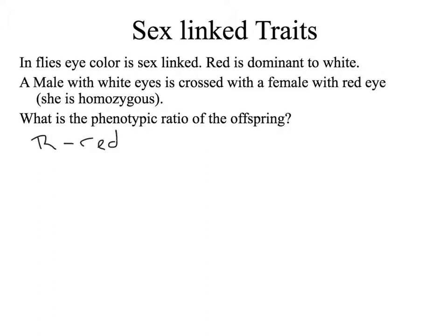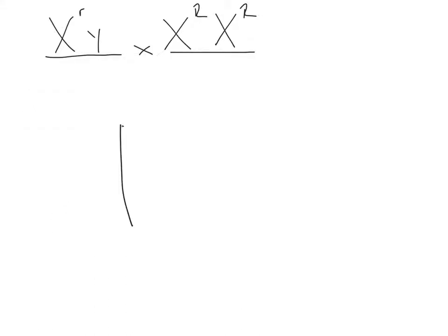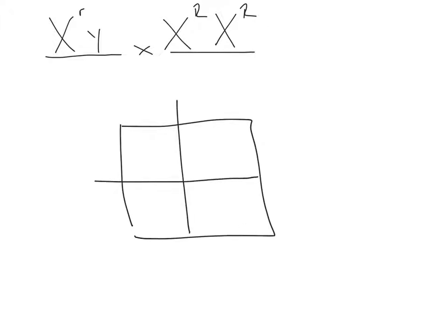Our male fly is white-eyed, which means he has X^r Y. The female's genotype is homozygous dominant, so she is X^R X^R. Once we have our cross, we plug this into a Punnett square. Remember to keep track of your X and Y chromosomes at all times. Dad is X^r Y, mom is X^R X^R, and we fill in the Punnett square keeping track of all the X's and Y's.